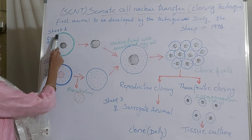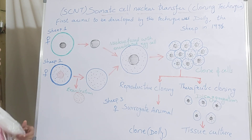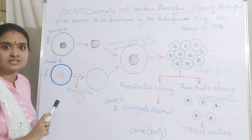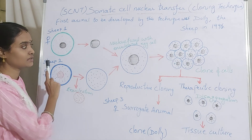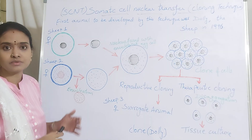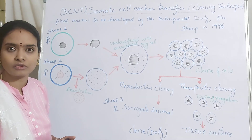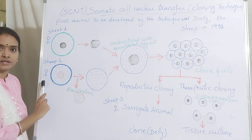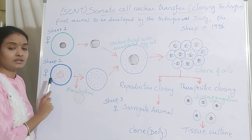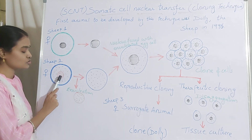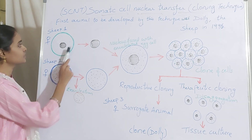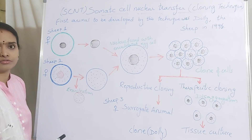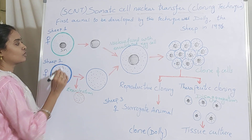Here you can see sheep 1. This is the female sheep from which they have taken the cells — the somatic cells. Somatic cells consist of 2N number of chromosomes, that means the diploid number of chromosomes. From another sheep, sheep 2, again a female sheep, they have taken the egg cell. The egg cell consists of a nucleus, and the somatic cell also consists of a nucleus with 2N, or diploid, number of chromosomes.